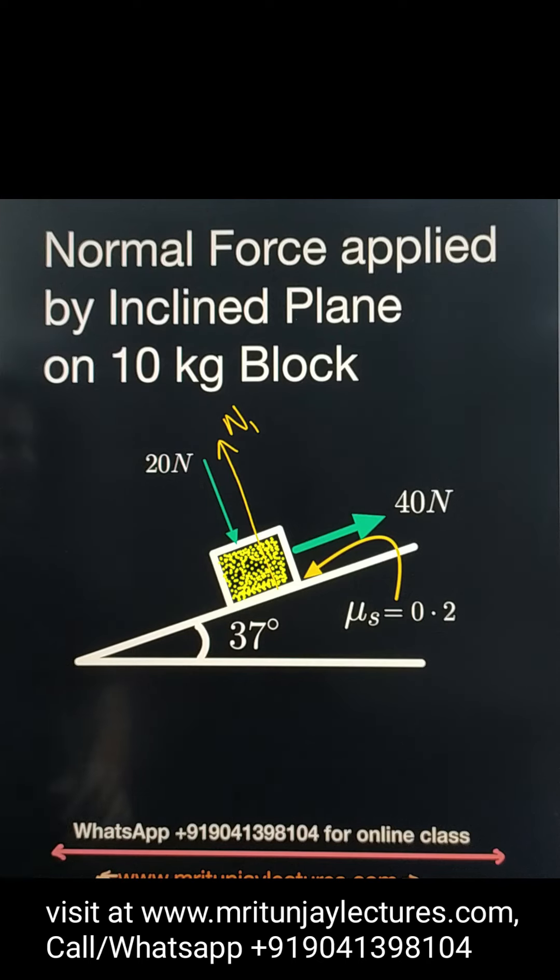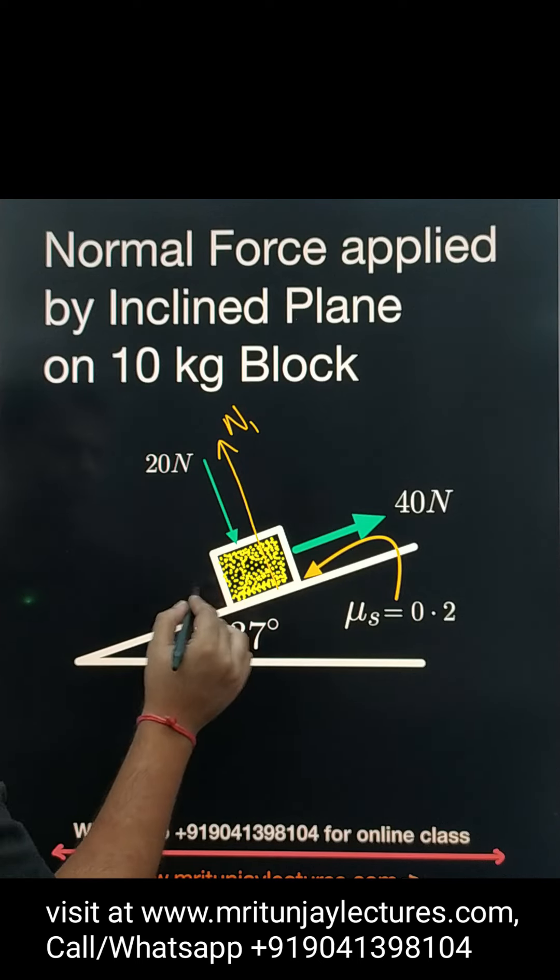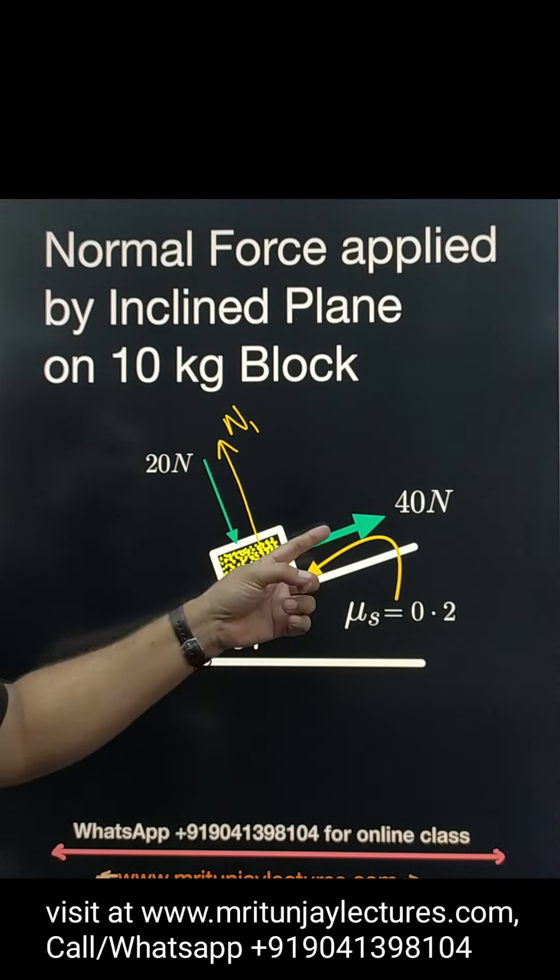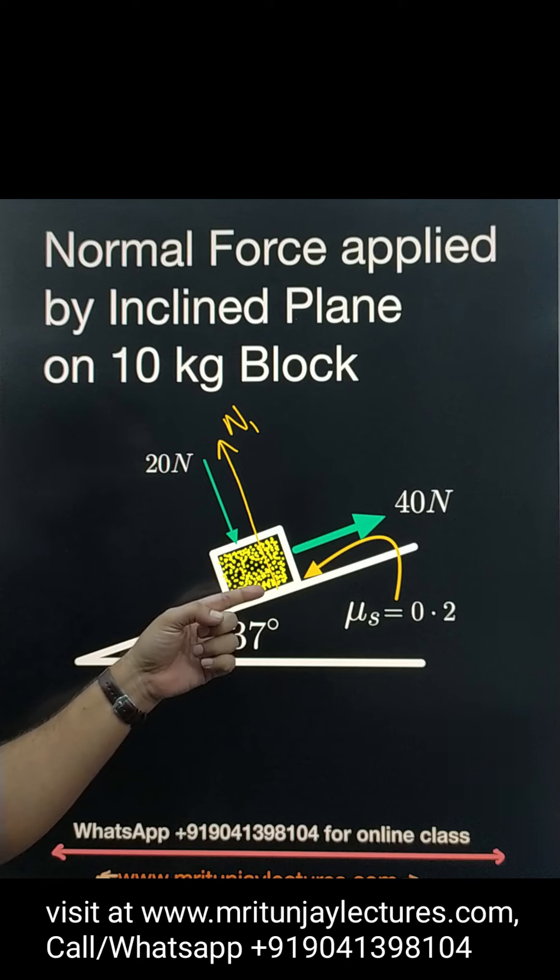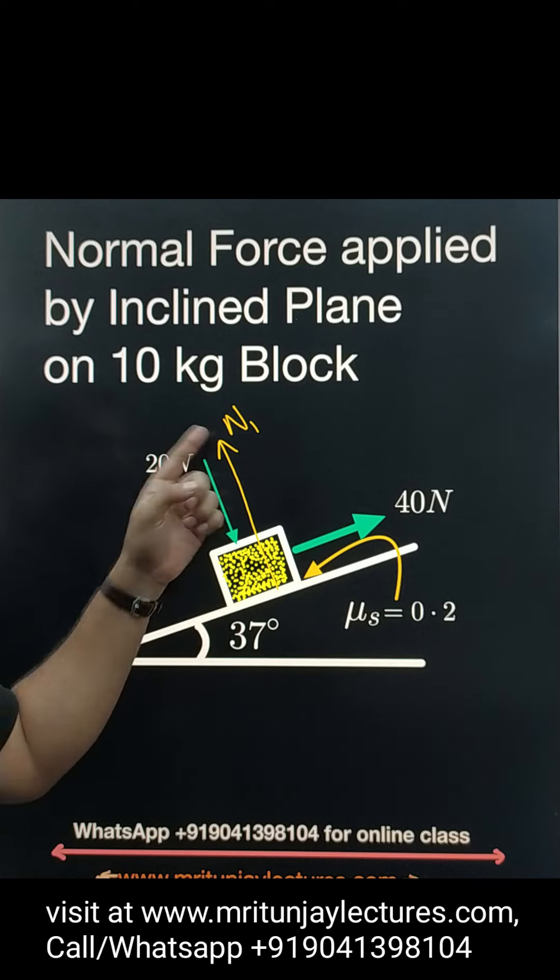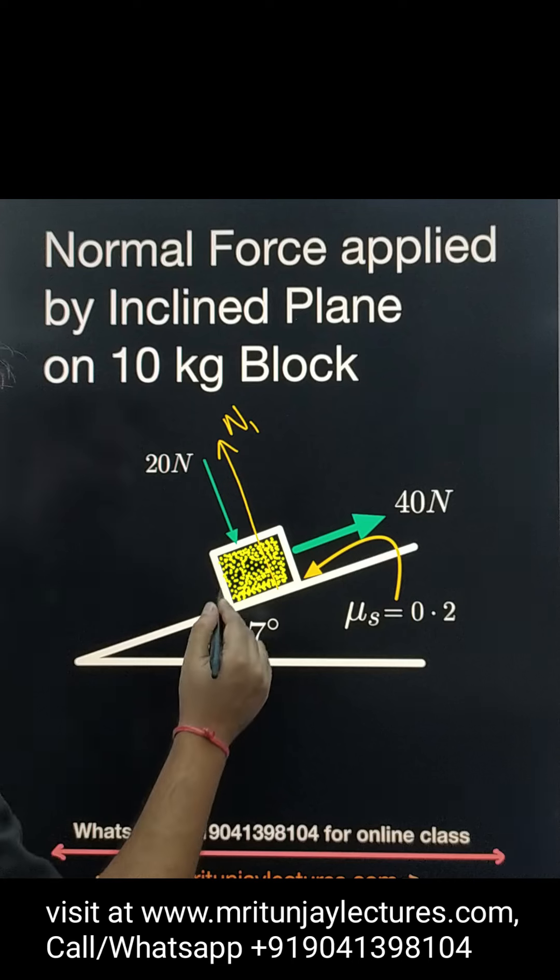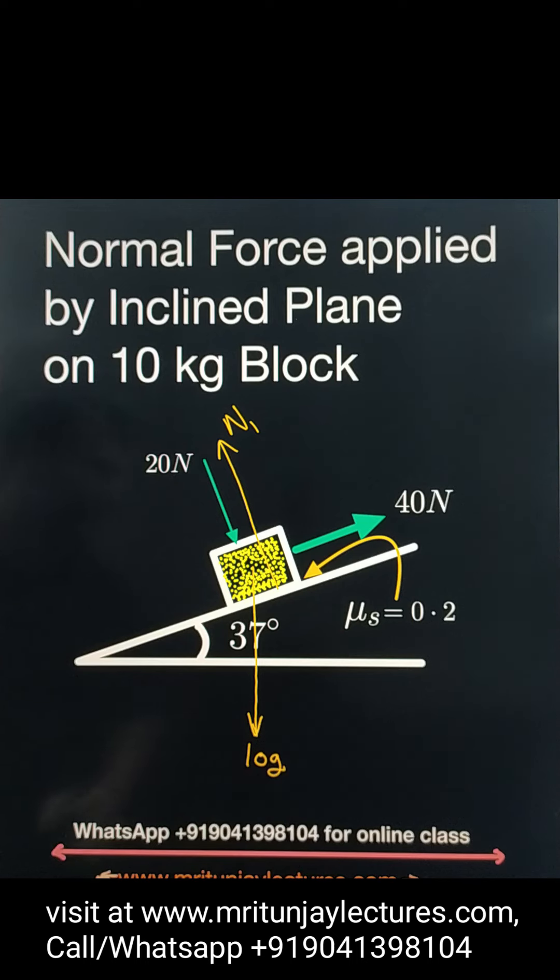So first of all, make free body diagram of 10 kg block. Direct contact force: the inclined plane will apply on 10 kg block always normal force, always perpendicular to surface. Indirect contact force due to gravity, that one 10 into G.